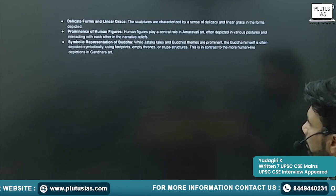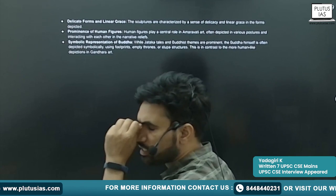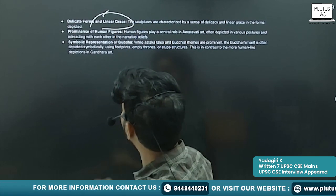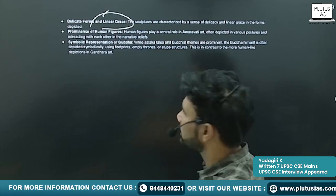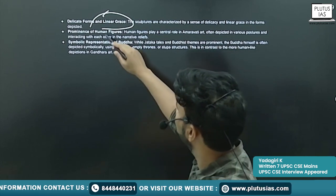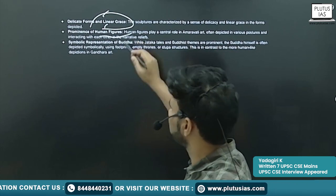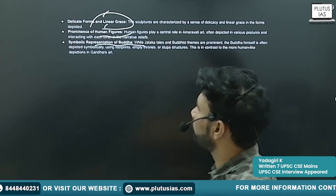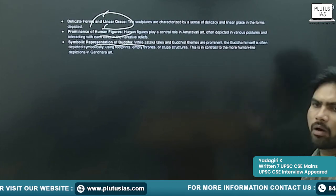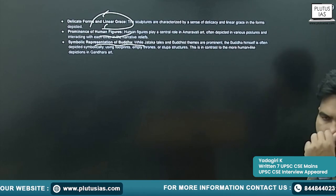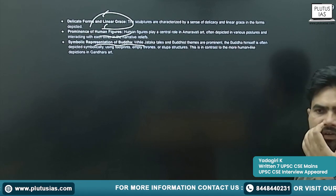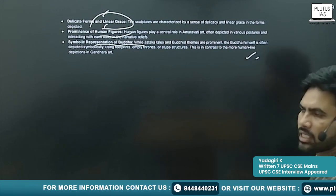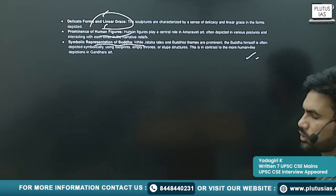All these things are depicted in the sculpture of the Amaravati School of Art. Other characteristic features include delicate forms and linear grace, prominence of human figures, and symbolic representation of Buddha — in the form of elephant, lotus, empty throne, etc.